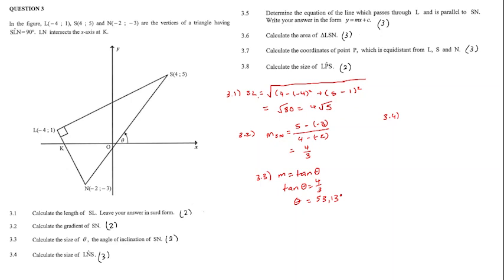Question 3.4. For question 3.4, we want to calculate the size of LNS, this angle over here. We know this angle, theta, and this angle is also theta, because it's vert-op angles. If we can get the gradient of LN, we can get this angle, and we can say external angles of a triangle to get LNS. First, we need to calculate the gradient of LN, which is equal to 1 minus minus 3 over negative 4 minus minus 2.